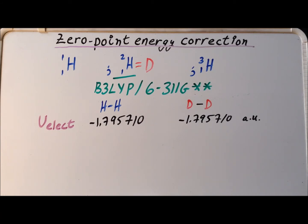You might be quite surprised to find that the electronic energies for hydrogen-hydrogen and deuterium-deuterium are absolutely identical. So we have -1.795710. And the units are atomic units, also known as Hartrees. One Hartree is equivalent roughly to 627.5095 kcal per mole. But the important thing is to notice from the point of view of the electronic energy at absolute zero, they are absolutely identical.